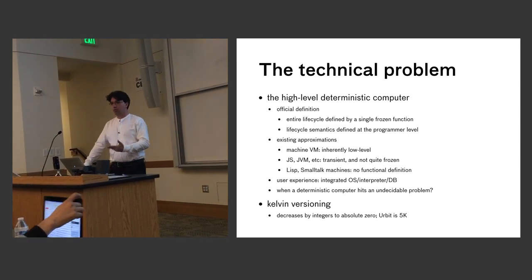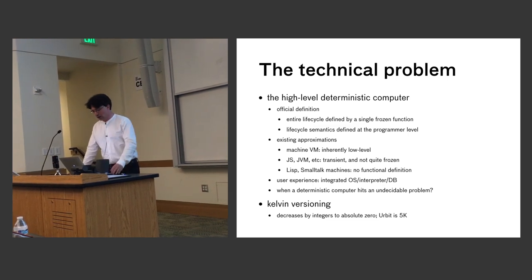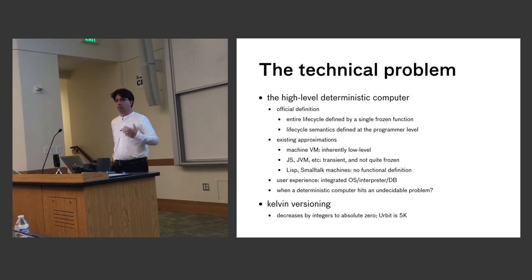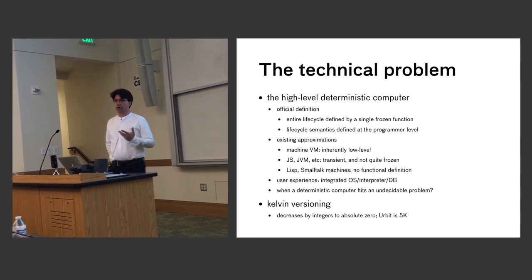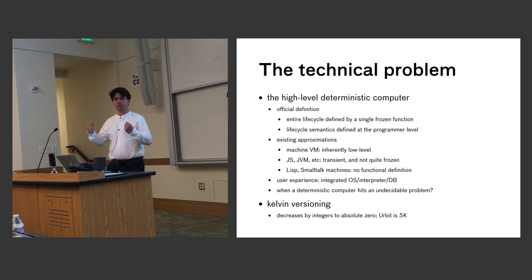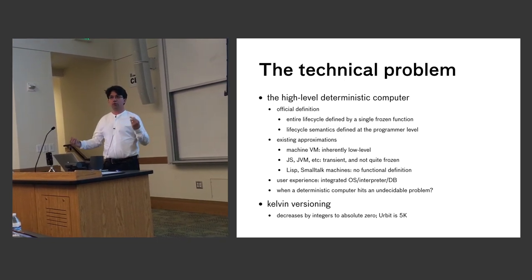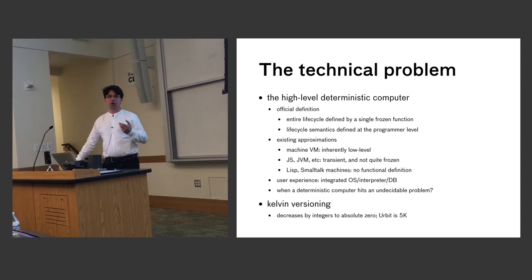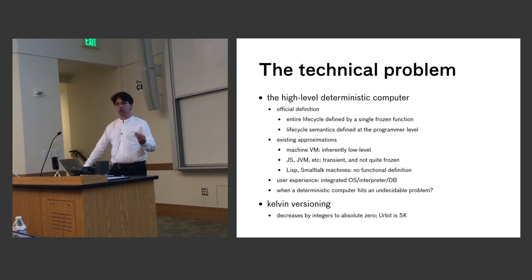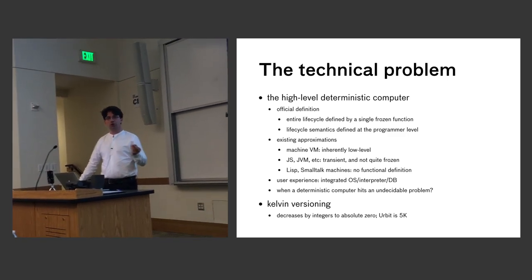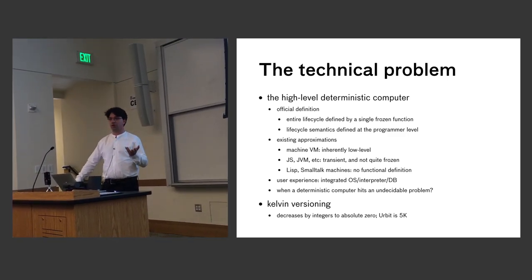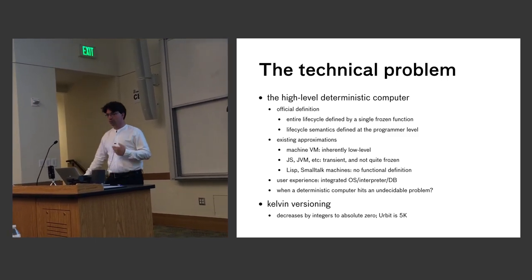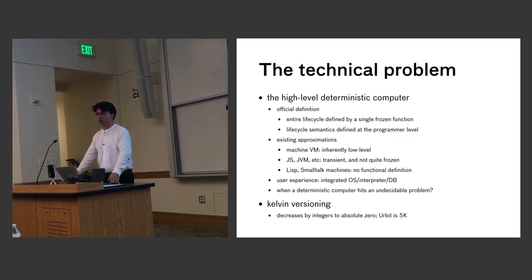If we look at approximations to this that exist today, JavaScript and the Java VM are high-level definitions, but they're defined only for a transient system. Here we're defining the whole life cycle of the computer — not just a memory image, but a whole machine, which is a single-level store. Lisp and Smalltalk have image-based systems that come closer to this, though they're not usually used as databases and aren't defined functionally in the same way.